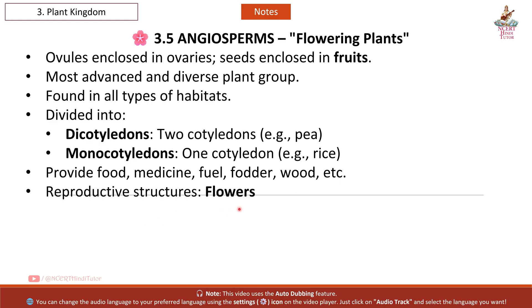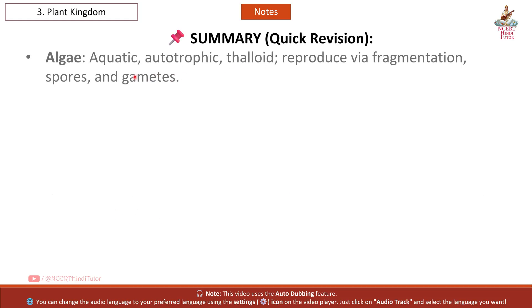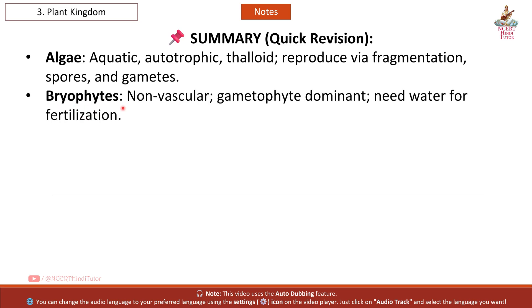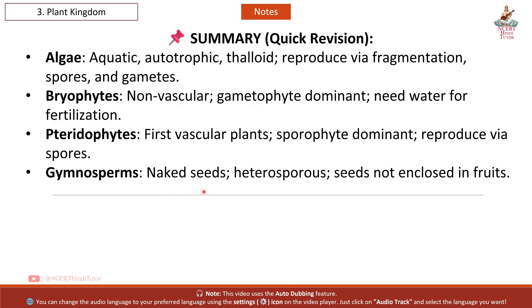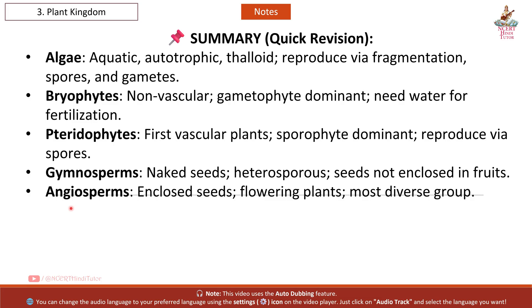Summary — quick revision: Algae: aquatic, autotrophic, thalloid; reproduce via fragmentation, spores, and gametes. Bryophytes: non-vascular, gametophyte dominant, need water for fertilization. Pteridophytes: first vascular plants, sporophyte dominant, reproduce via spores. Gymnosperms: naked seeds, heterosporous, seeds not enclosed in fruits. Angiosperms: enclosed seeds, flowering plants, most diverse group.